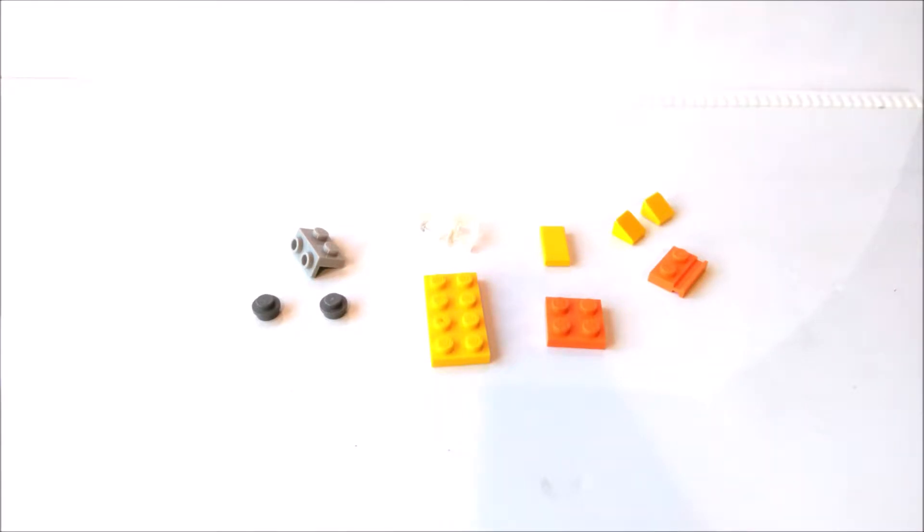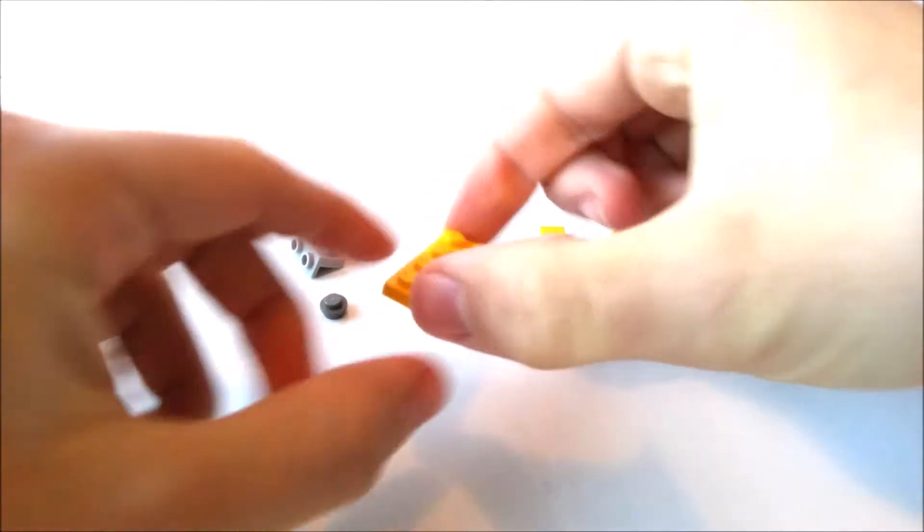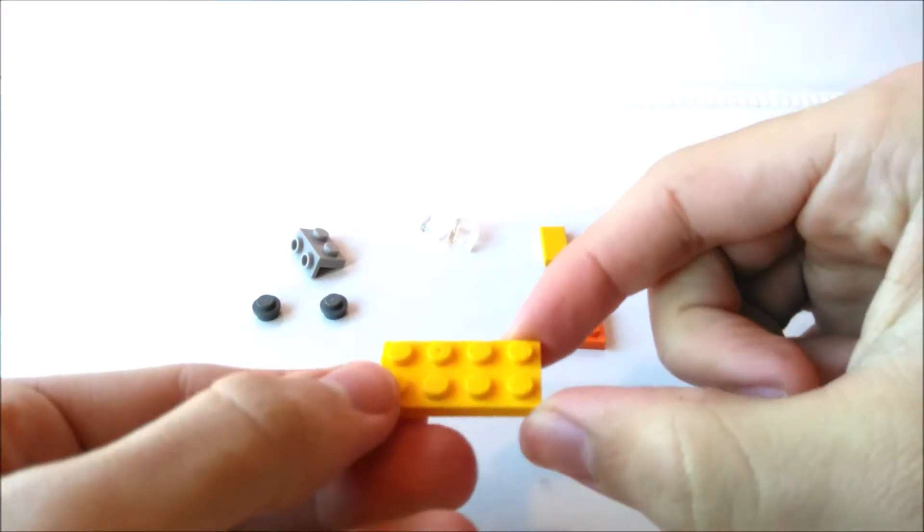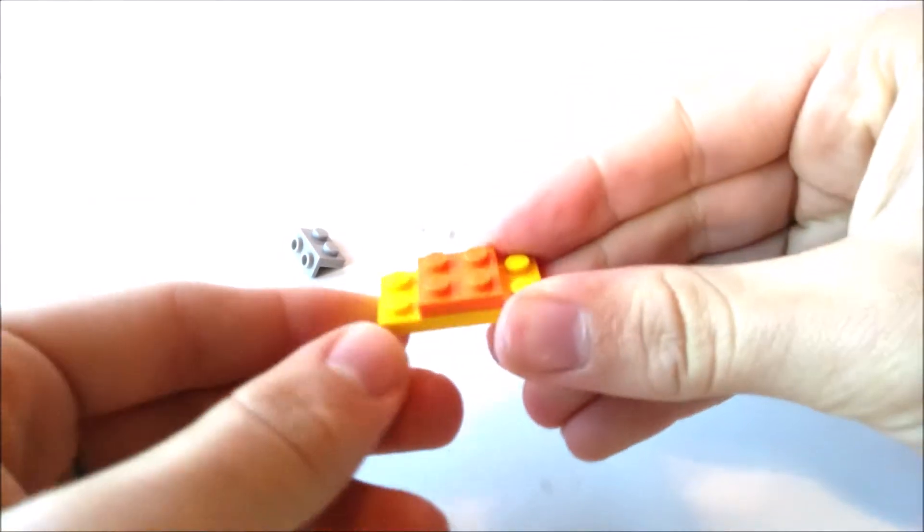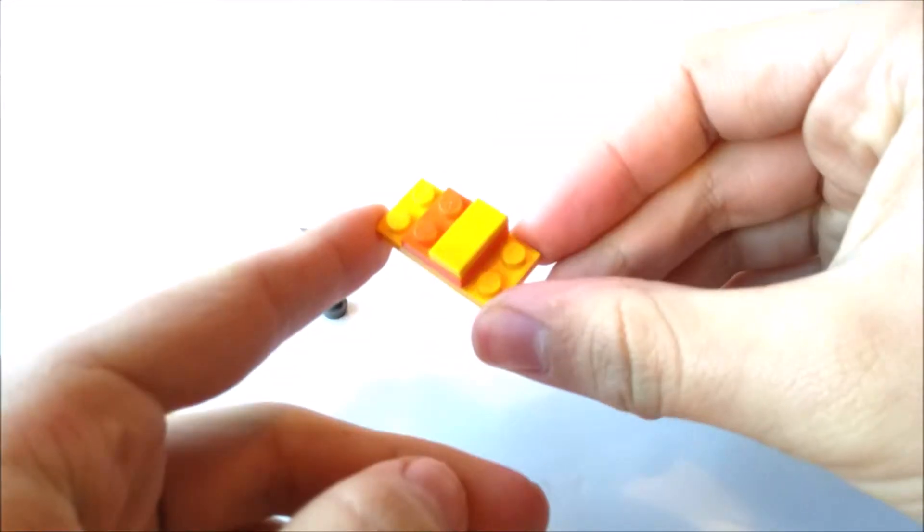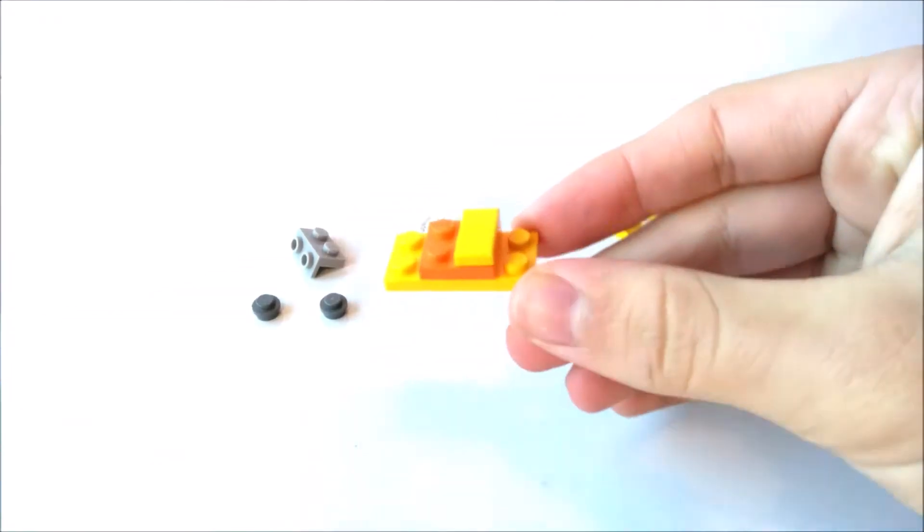This build consists of 11 pieces. We start with a 2x4 base plate, like so, and putting an orange 2x2 plate in the centre. We then put a 1x2 yellow tile above.